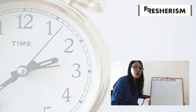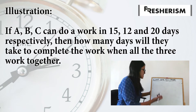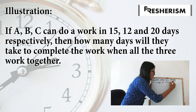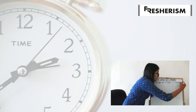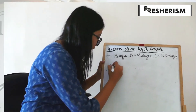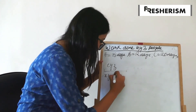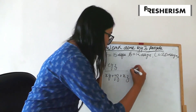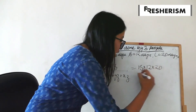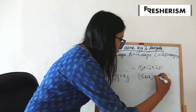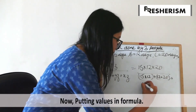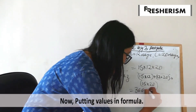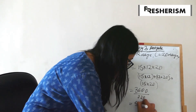Let us now consider an example to understand the formula derived. Let us consider that A can do a certain amount of work in 15 days, B can do the same work in 12 days, whereas C does the same work in 20 days. Putting these values into the formula XYZ upon XY plus YZ plus ZX, we get 15 into 12 into 20 upon 15 into 12 plus 12 into 20 plus 15 into 20. By calculating this, we get 3600 by 720, which gives us the answer as 5 days.